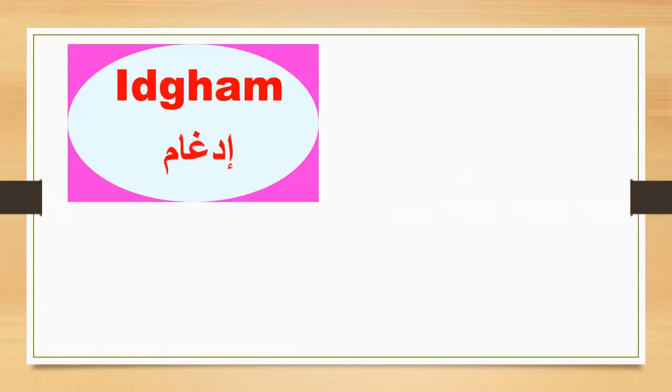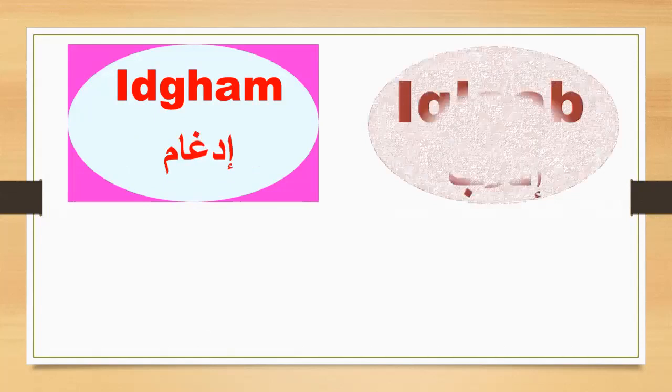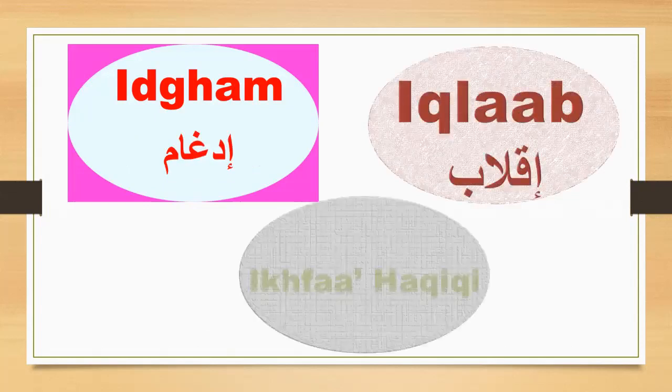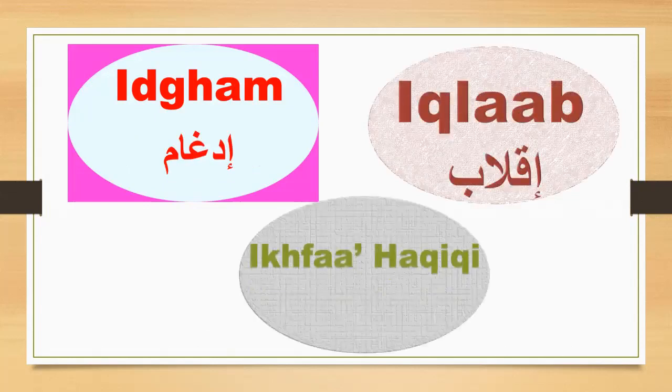The remaining rules with Noon Sakin and Tanwin are: Idgham, Iqlab, and Ikhfa Haqiqi.